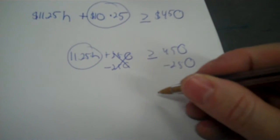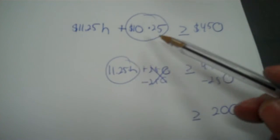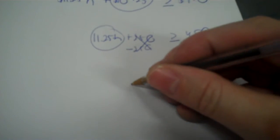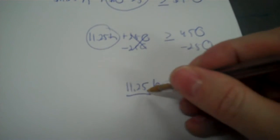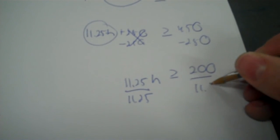Minus 250 gives 200. You don't have to worry about flipping the sign because you never have a negative multiplier on your variable. Then divide by 11.25. I took 200 divided by 11.25. Since it's greater than, instead of writing 17-point-something, round up to 18. So I can work 18 or more hours at Hy-Vee to meet my goal.